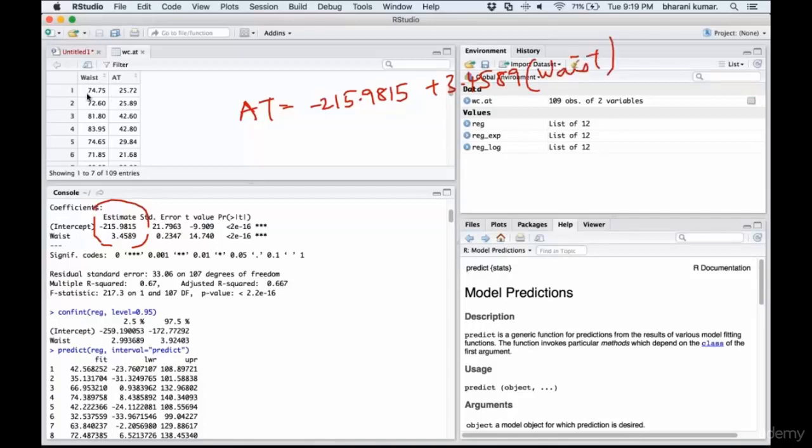Now, if you substitute this first entry waist circumference in this, you get a predicted value because it's a prediction equation. That predicted value happens to be 42.56, and in reality the adipose tissue value is 25.72.